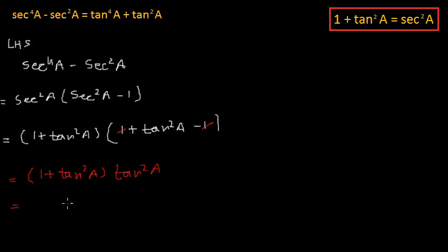If we expand this, we get tan²a multiplied by 1, which is tan²a, plus tan²a multiplied by tan²a, which is tan⁴a. Rearranging gives us tan⁴a plus tan²a.